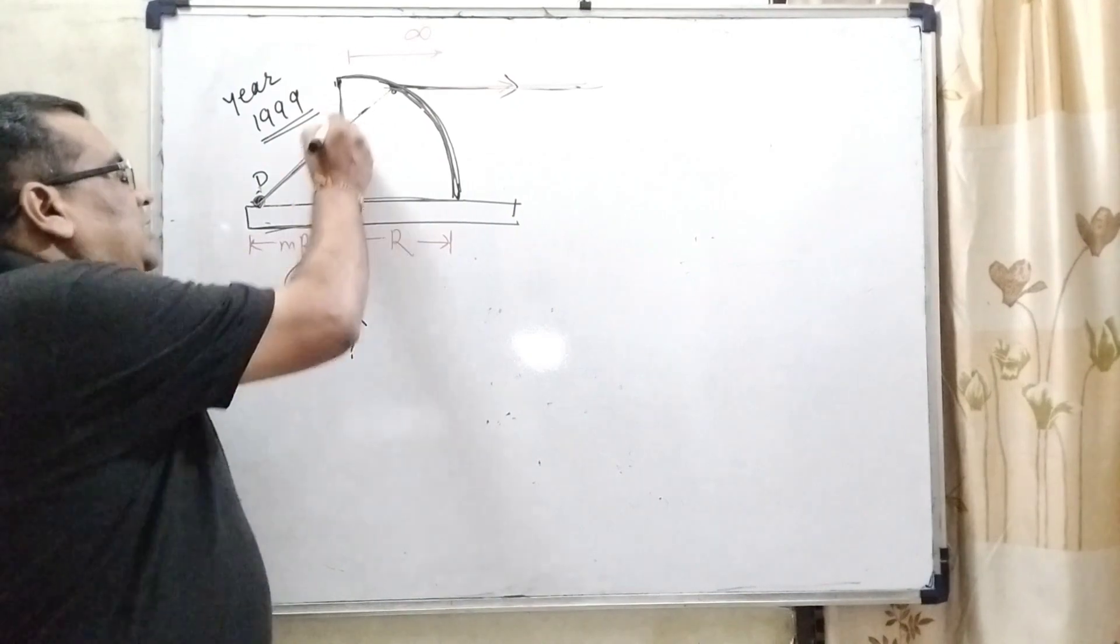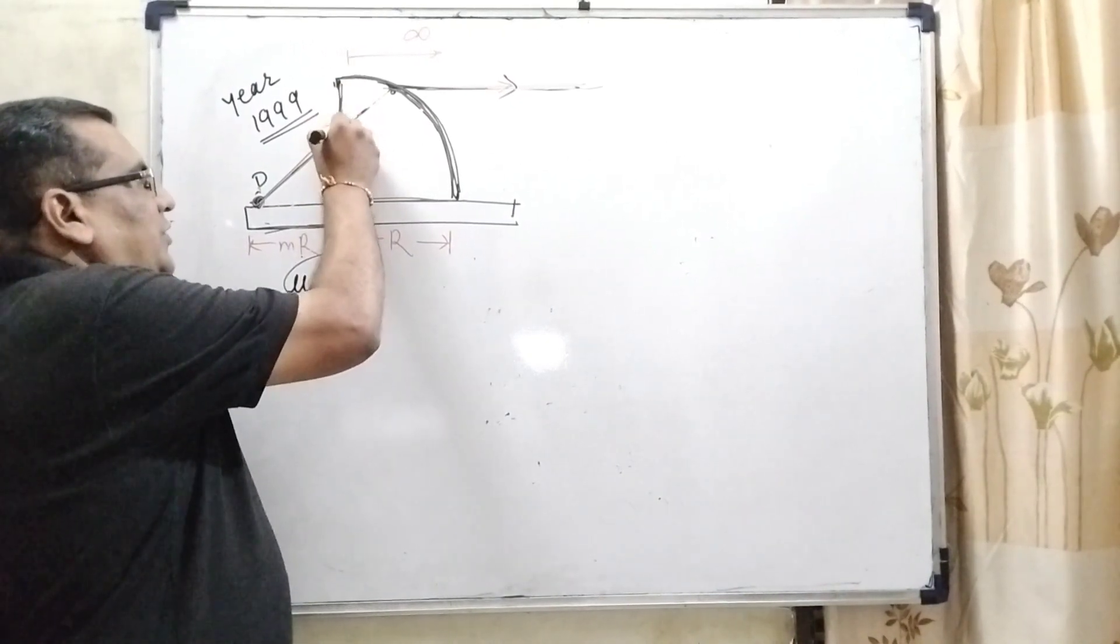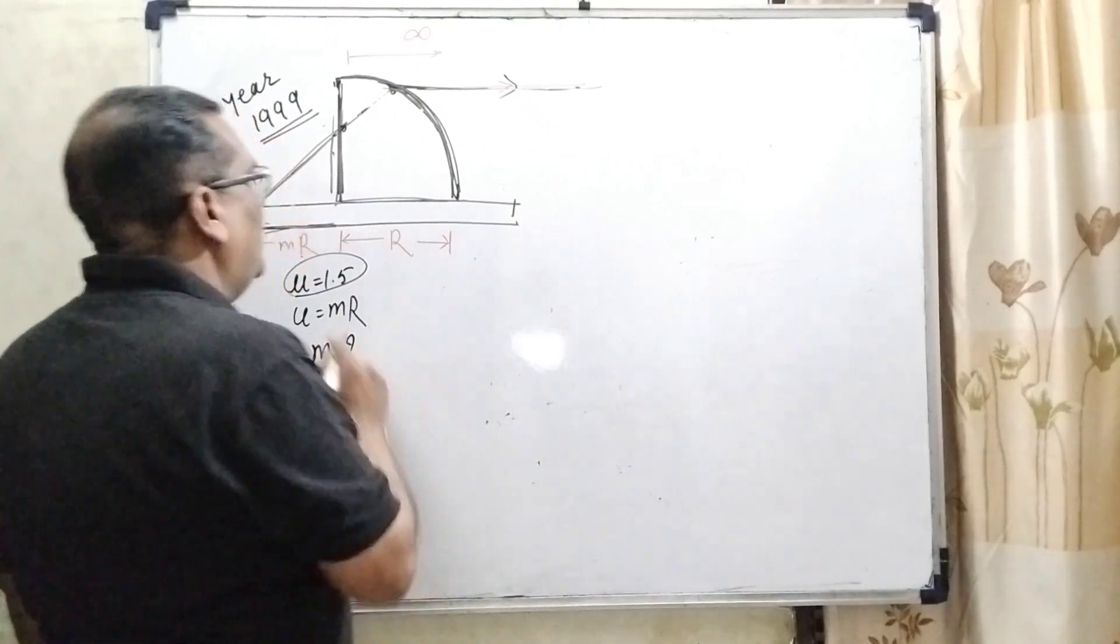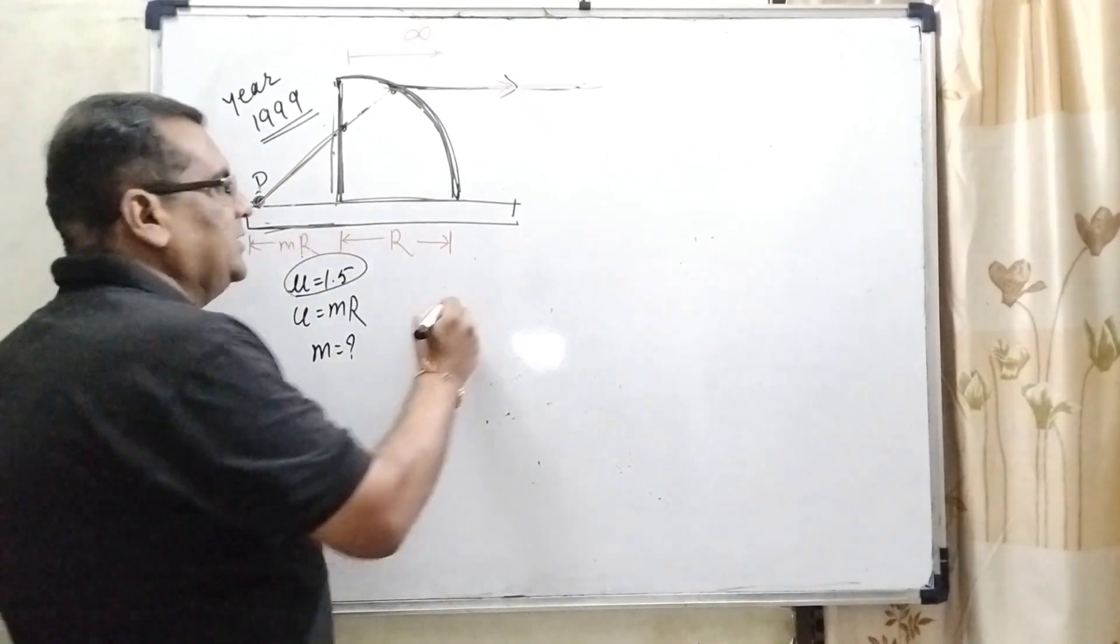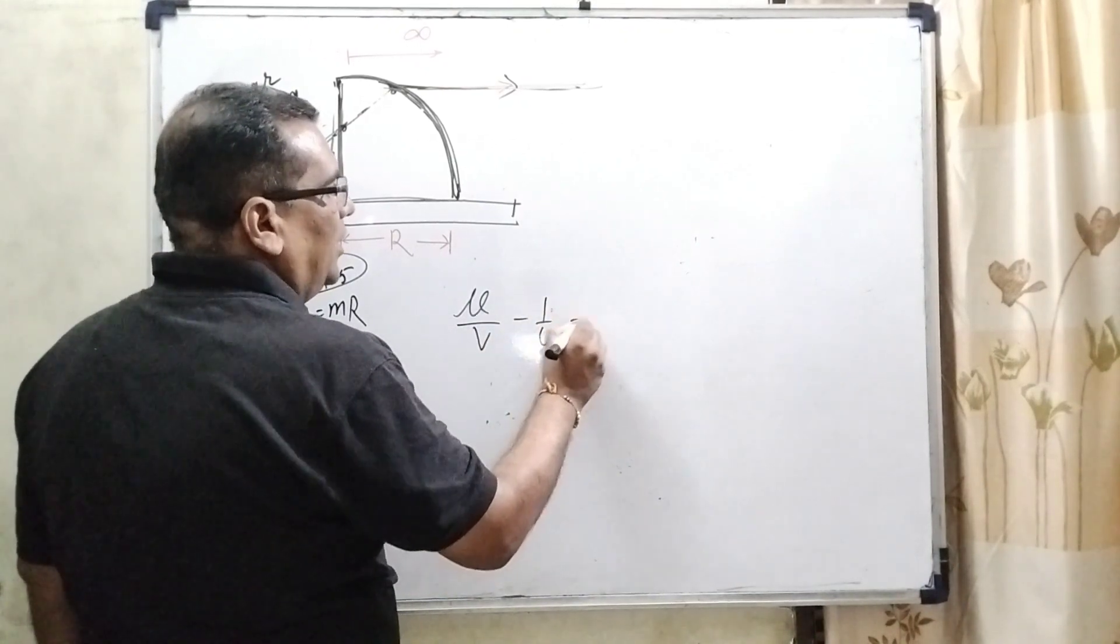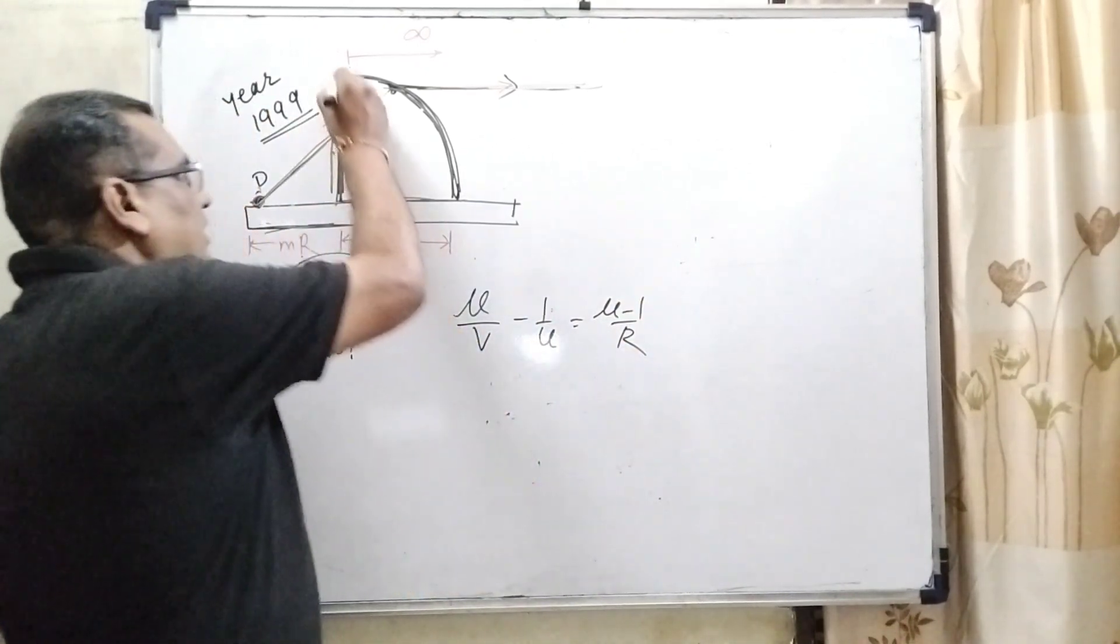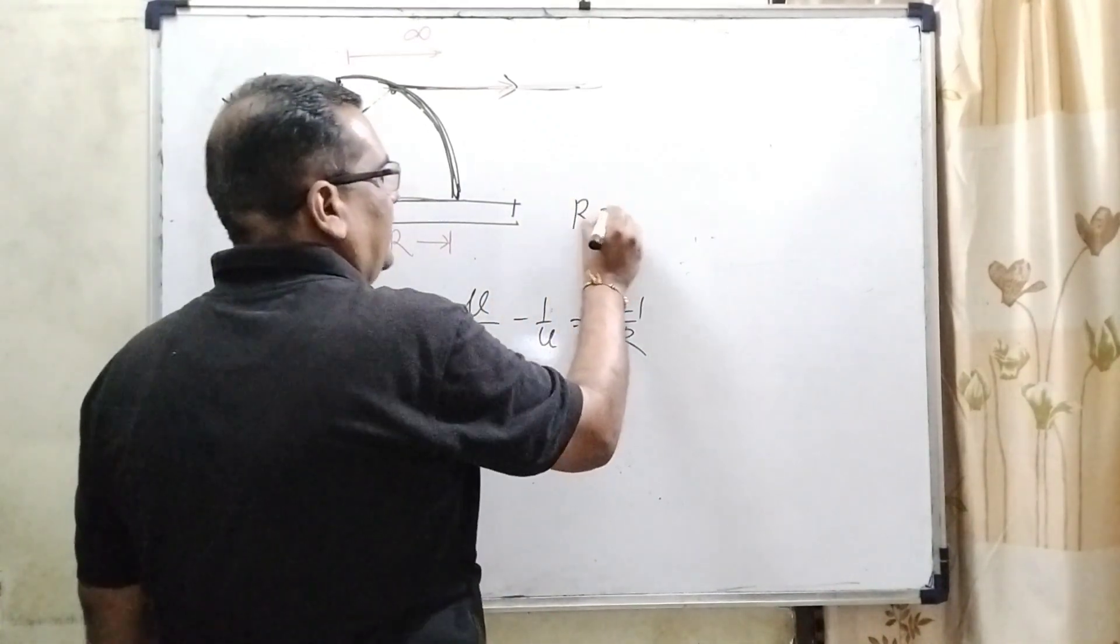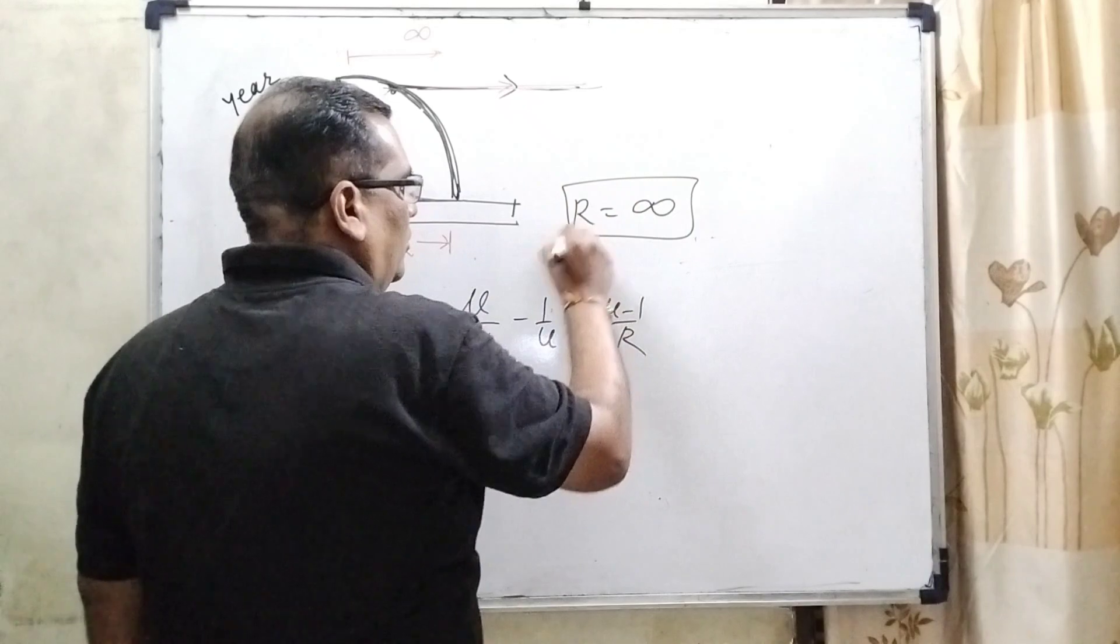For first refraction, we are using the formula for the plane surface. We are using same formula for the rarer medium to the denser medium. That is mu by v minus 1 by u equal to mu minus 1 by r. Here you can see that it is the plane, so therefore radius of curvature become infinity.